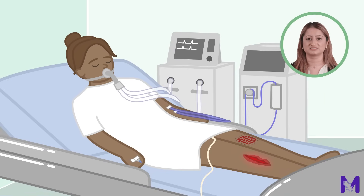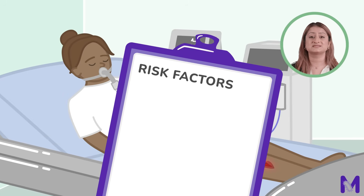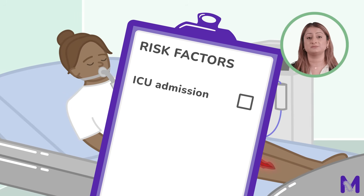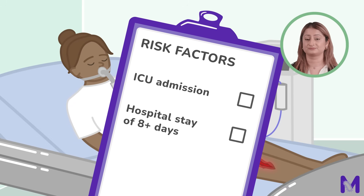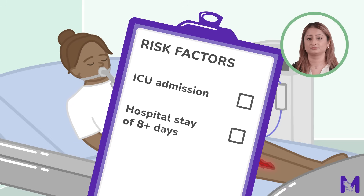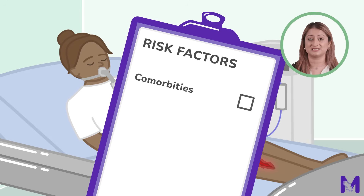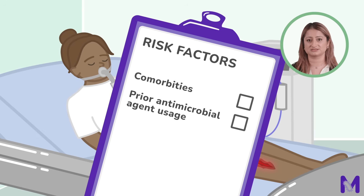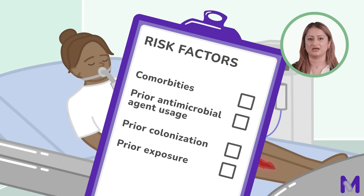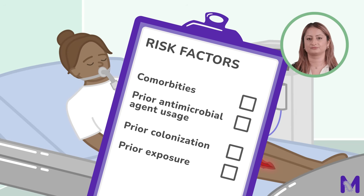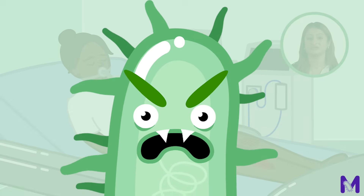There are a few general risk factors to look out for when considering if an infection could be NBL-producing. For example, if the patient has recently been admitted to an intensive care unit, or if they've recently had a hospital stay of longer than eight days. It's also important to check patient history to determine if the patient has comorbidities, a prior usage of antimicrobial agents, prior colonisation of NBL-producing bacteria, or exposure to NBL-producing bacteria. These factors can all put a patient at greater risk of developing an NBL-producing infection.